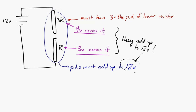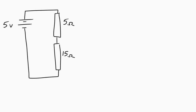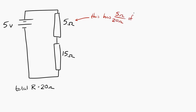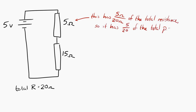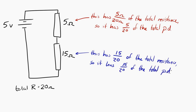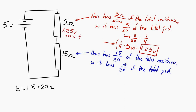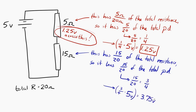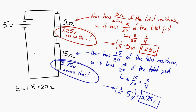Let's do one more example. Say we have a 5 volt EMF connected to a 5 ohm resistor and a 15 ohm resistor. The total resistance is 20 ohms. The upper resistor has 5/20ths of the total resistance, so it has 5/20ths — or one quarter — of the total potential difference, which is 1.25 volts. The lower resistor has 15/20ths — three quarters — of the potential difference, which is 3.75 volts.